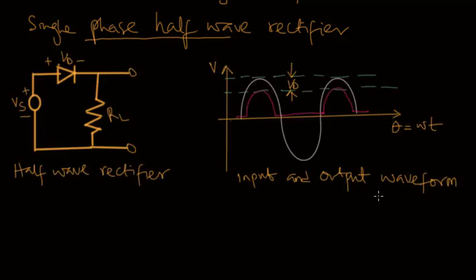Let's discuss the single phase half wave rectifier. Shown is the circuit of a half wave rectifier and the input and output waveform. A half wave rectifier uses alternate half cycles of the input sinusoid. As shown in this circuit, the diode VD is forward biased. So during the positive half cycle, this diode will conduct, allowing current to flow through the load RL, as can be seen in the input and output waveform.